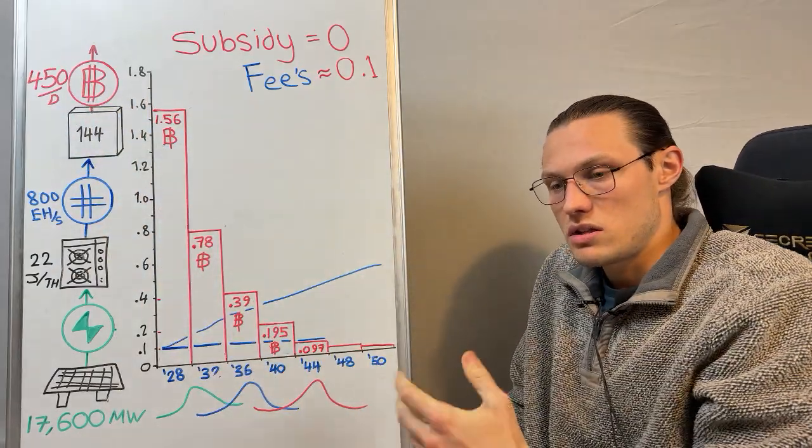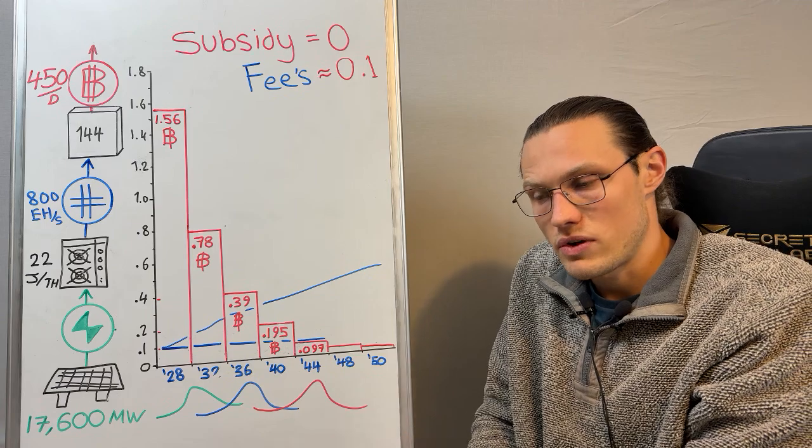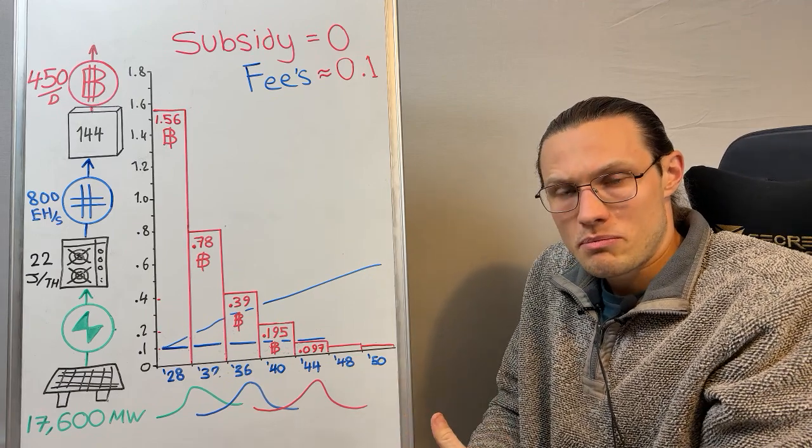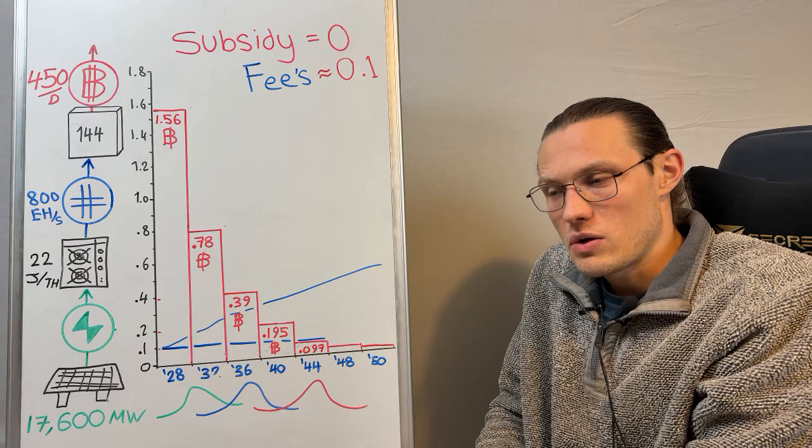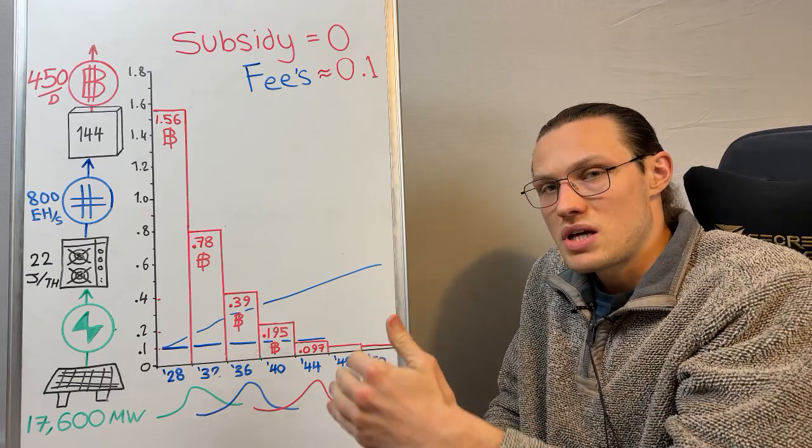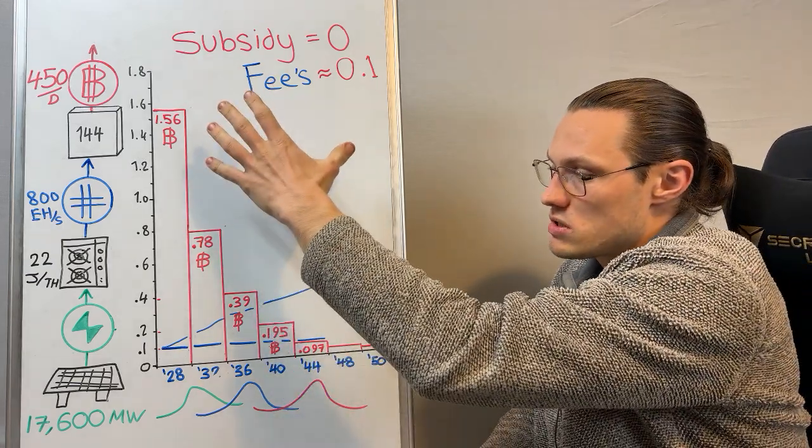And the amount of settlement on the block space side of things in transaction settlement is still very low. The market cap of Bitcoin in dollarized terms still very low. And so there is a lot of upside potential for a global monetary system based on energy.